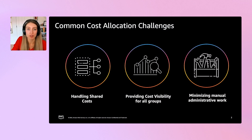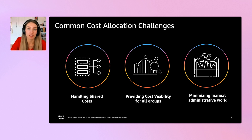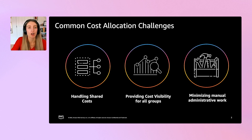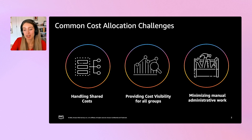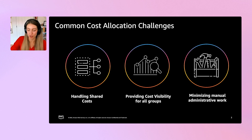Cost allocation in general can be one of the more complex questions within the AWS FinOps world, especially at scale. The top three things that we usually hear folks talk about when they are going on their cost allocation journey are how to handle shared cost, how to provide cost visibility for all the different groups of their business, and how to minimize the amount of manual work needed to solve these problems and sustainably do this work.